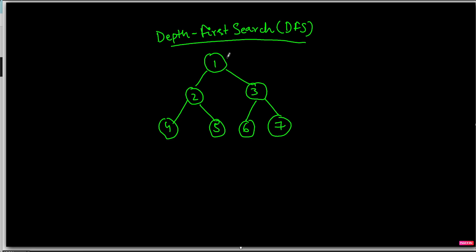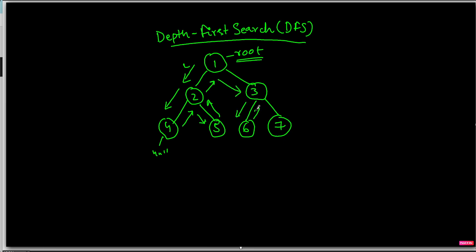For example, let's say this is our binary tree and this is our root, and we'll start from the root. First we go to the depth on the left side — we can go in either direction, both are fine — so here we'll go left: one, two, four, and now here it's null so we cannot go further, so we'll come back and go to the depth: five, and then come back, come back, go to the right side: three, six, and then seven.